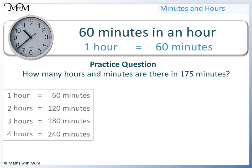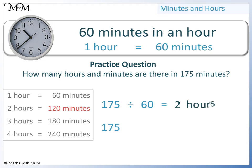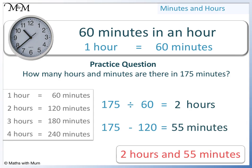Here is the second practice question for this lesson. How many hours and minutes are there in 175 minutes? Pause the video and have a go. 1 hour equals 60 minutes, so we will divide 175 by 60. 3 times 60 equals 180, which is too big. 2 times 60 equals 120, so 60 goes into 175 twice, which means 2 hours. To find the remainder, we subtract 2 hours, which is 120 minutes, from 175. 175 take away 120 equals 55, so 55 minutes. 175 minutes is the same as 2 hours and 55 minutes.